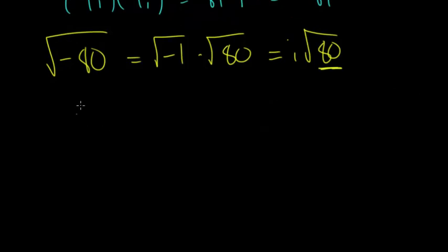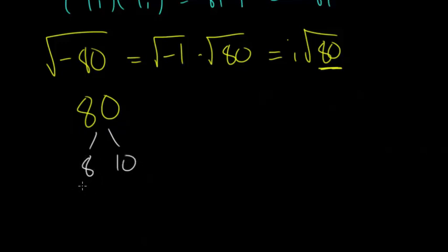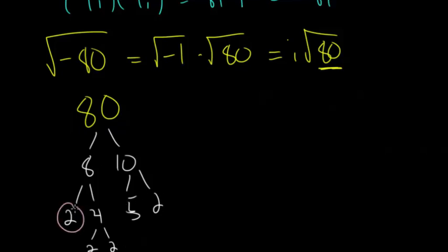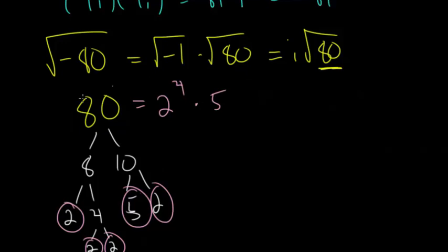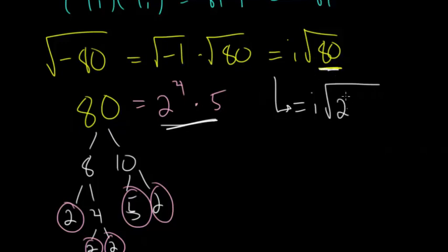To simplify the square root of 80, I'll use a factor tree. For 80, two numbers that multiply to give 80 are 8 and 10. Then 8 is 2 times 4, and 4 is 2 times 2. Meanwhile 10 is 5 times 2. Collecting all the ends of the branches, 80 equals 2 times 2 times 2 times 2 times 5, which is 2 to the 4th times 5. So we can rewrite the square root of 80 as the square root of 2 to the 4th times 5.